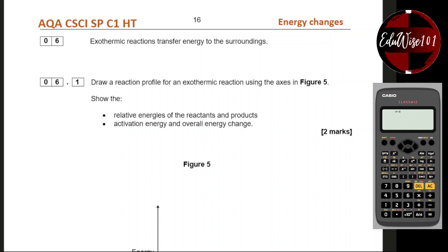Question number six is on energy changes. Exothermic reactions transfer energy to the surroundings. Remember, exothermic refers to temperature — you're going to lose heat. Draw a reaction profile for an exothermic reaction using the axis in figure five. Show the relative energies of the reactants and products, activation energy, and the overall energy change.